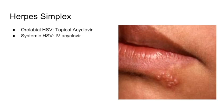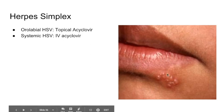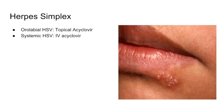The next subtopic is herpes simplex infections, caused by HSV1 or HSV2. The key antiviral is acyclovir. For oral labial HSV, use topical acyclovir. For systemic HSV, use IV acyclovir. The mechanism of acyclovir will be covered in later exams.